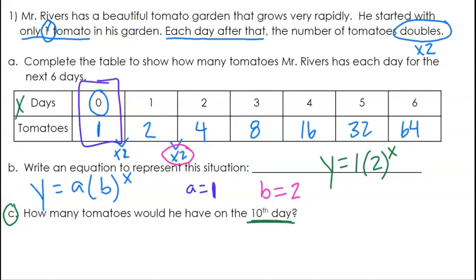Well, day is our x value. So now we know that x is equal to 10. It's like we're extending this table out and we want which one is the tenth day, tenth day's value. So instead of using the pattern, we can just use our equation and plug that in. So we can say y equals one times two to the power of 10.